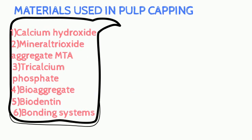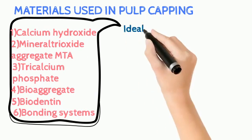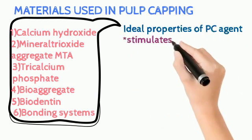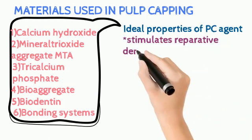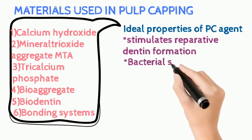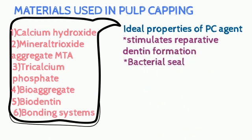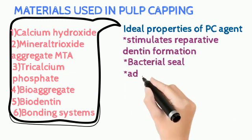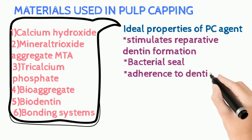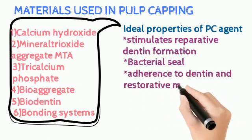Now let's know the ideal properties of pulp capping agents. They should stimulate reparative dentin formation. They should be bactericidal or bacteriostatic, which can provide a bacterial seal. They should adhere well to dentin and restorative materials. They should resist the forces under restoration for a lifetime. They should be sterile and radiopaque.